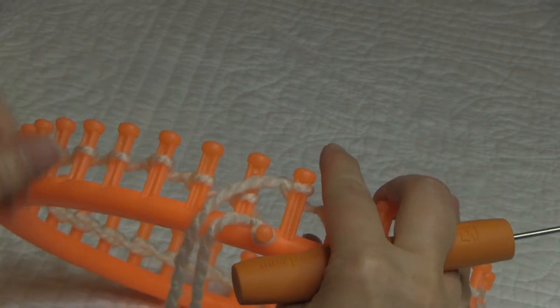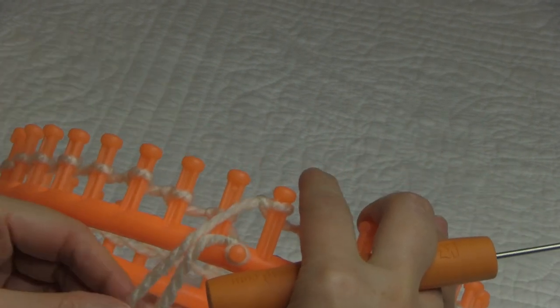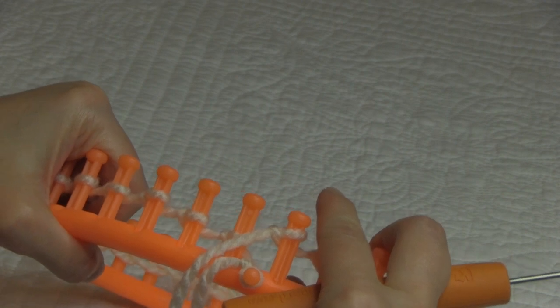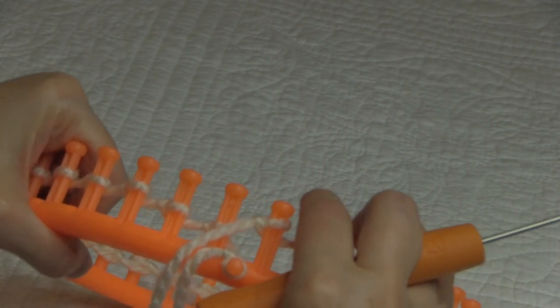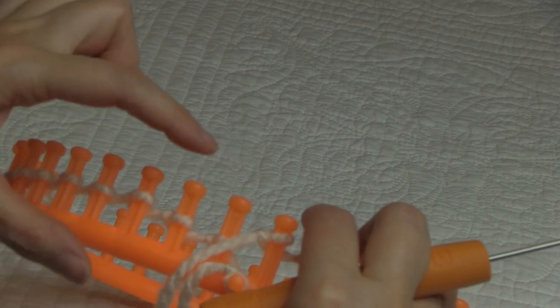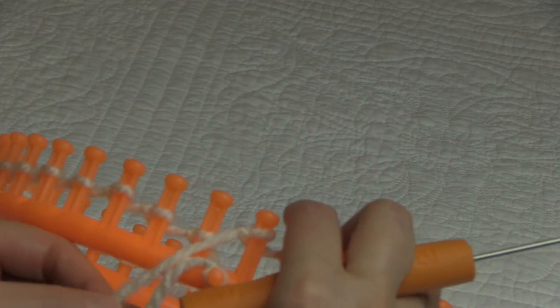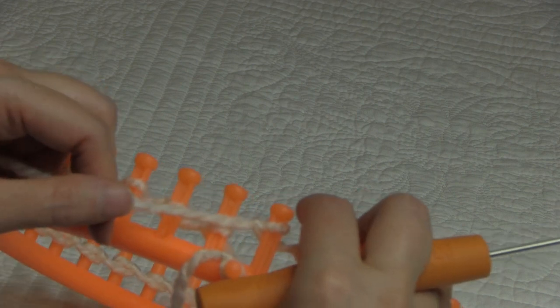Once your cast on is complete, we're ready to start the brim of the hat. Today I'm going to be using an e-wrap rib stitch brim. I'm going to do six rows of a knit one, purl one, knit one, purl one, and I'm just going to repeat that pattern all the way around for six rows.